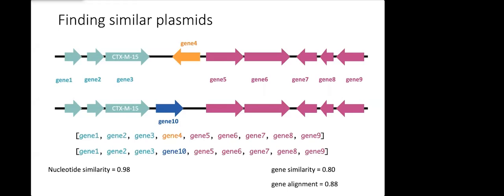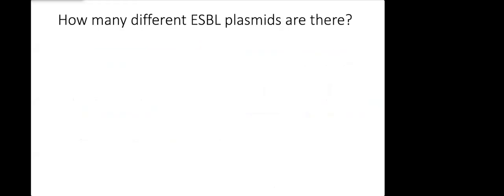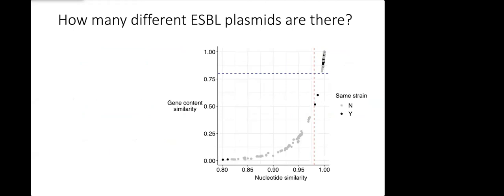Back to our question, how many different ESBL plasmids are there? This is what we did. We compared every plasmid pairwise and on this graph here I'm showing just the nucleotide similarity scores and the gene content similarity scores. Each point is a pair of plasmids colored by whether they come from the same strain or sequence type or not, so gray if they don't and black if they do.